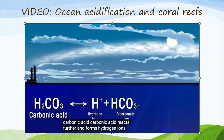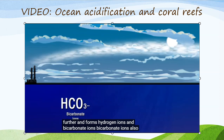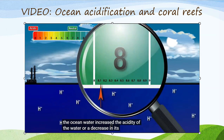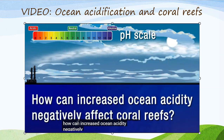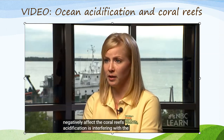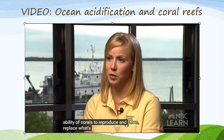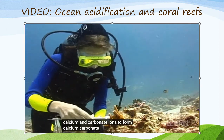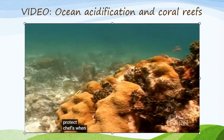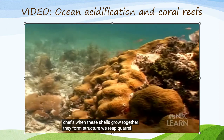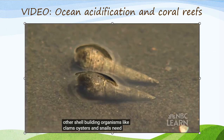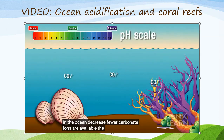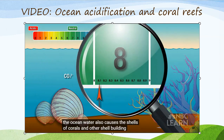Carbonic acid reacts further and forms hydrogen ions and bicarbonate ions. Bicarbonate ions also react to form hydrogen ions and carbonate ions. The free hydrogen ions in the ocean water increase the acidity of the water, or a decrease in its pH levels. The acidification is interfering with the ability of corals to reproduce and replace what's being lost. Coral polyps use calcium and carbonate ions to form calcium carbonate — the chemical ingredients that make up their hard protective shells. When these shells grow together, they form a reef. As the pH levels in the ocean decrease, fewer carbonate ions are available, and the decreased pH also causes the shells of corals and other shell-building organisms to dissolve.